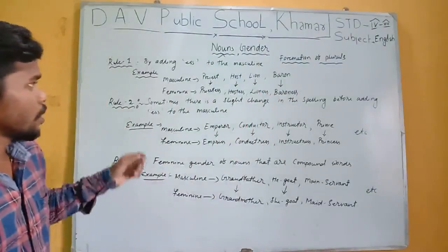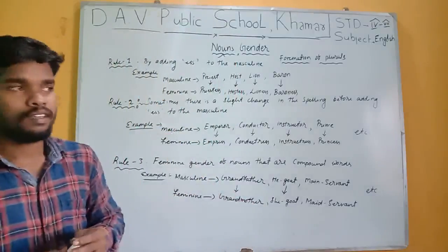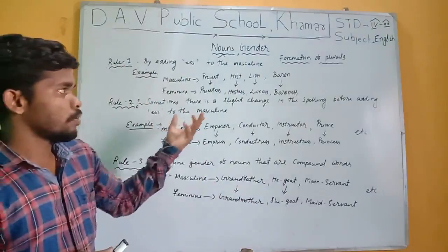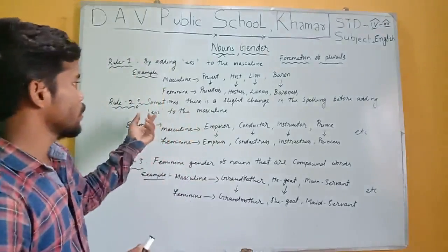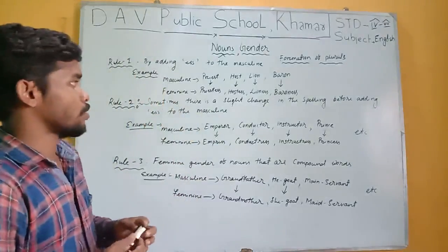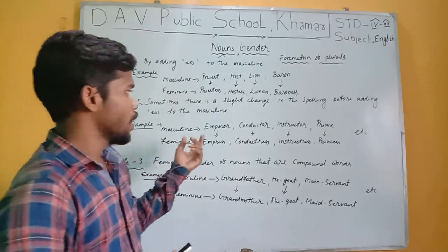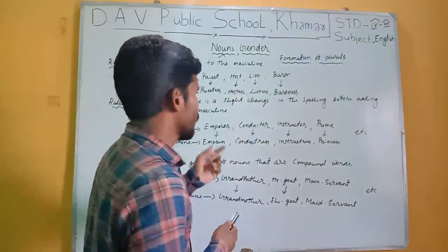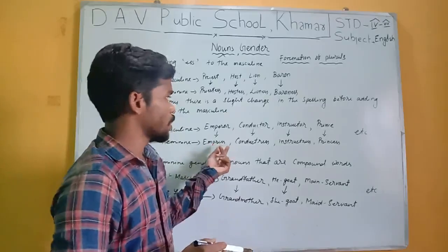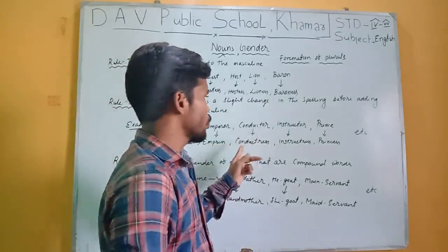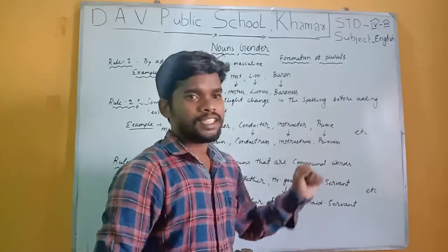The second rule is that sometimes there is a slight change in the spelling before adding -ess. By a slight change in the spelling and adding -ess, we can convert masculine to feminine gender. For example: emperor → empress (changing -or to -ess), conductor → conductress, instructor → instructress, prince → princess.